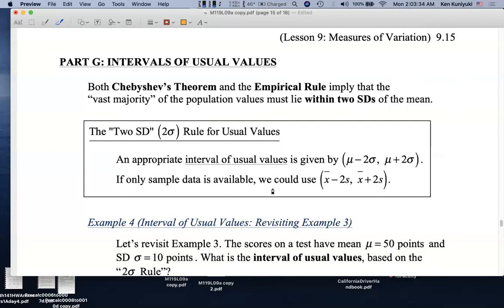If only sample data is available, we could use the sample mean instead of the population mean, and we could use the sample standard deviation instead of the population standard deviation. So we could use for sample data x bar minus 2s and x bar plus 2s as our limits for this interval of usual or typical values.